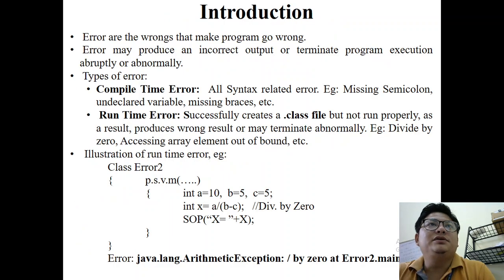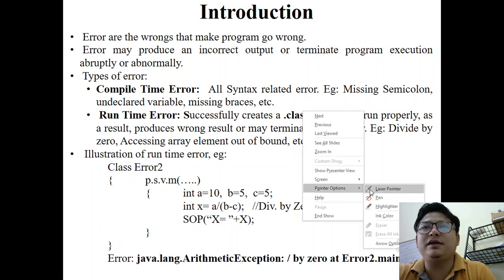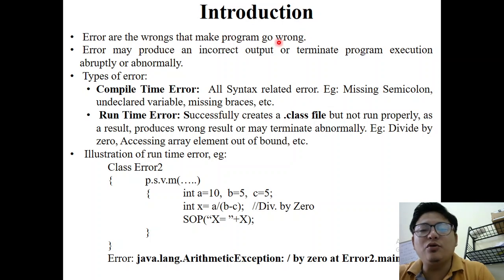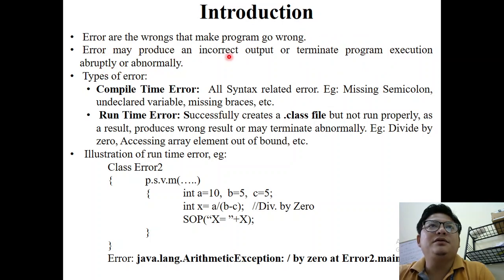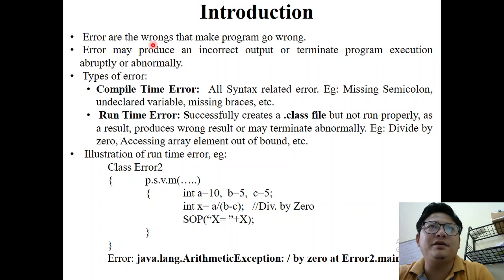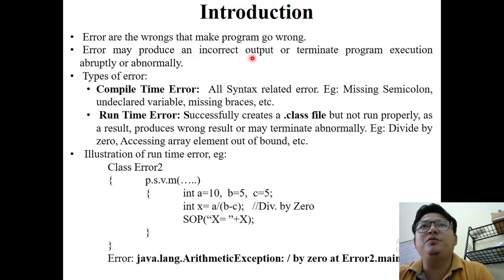What is an error? Errors are something that makes a program go wrong. Go wrong means the program may give you either incorrect output or terminate the program abnormally. An error is something wrong that exists in the program that you have written, and it makes the program go wrong — either giving incorrect output or causing abnormal termination.